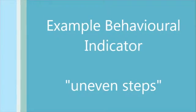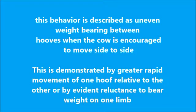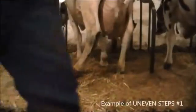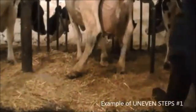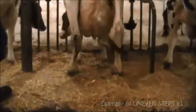For our last behavioral indicator, we will describe and show examples of uneven steps. One person shifts the cow left to right while the other person observes for uneven steps. This behavior is described as uneven weight bearing between hooves when the cow is encouraged to move side to side. This is demonstrated by greater rapid movement of one hoof relative to the other, or by evident reluctance to bear weight on one limb. In this clip, we can see that the cow is choosing not to bear weight evenly — she is moving her right leg more rapidly in order to spend less time on the left leg. This cow would be considered uneven. This is considered one of the more challenging behaviors to identify, so let's watch it again.